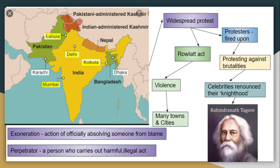Protests erupted in Delhi, Kolkata, Mumbai, and elsewhere. There were violent protests against the Rowlatt Act across cities and towns, with agitation against the British authorities.